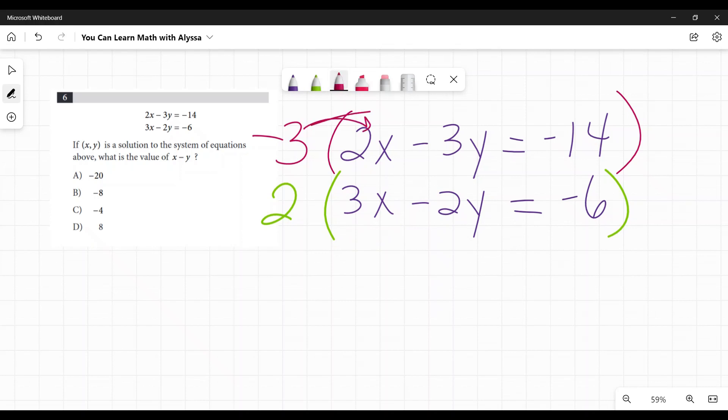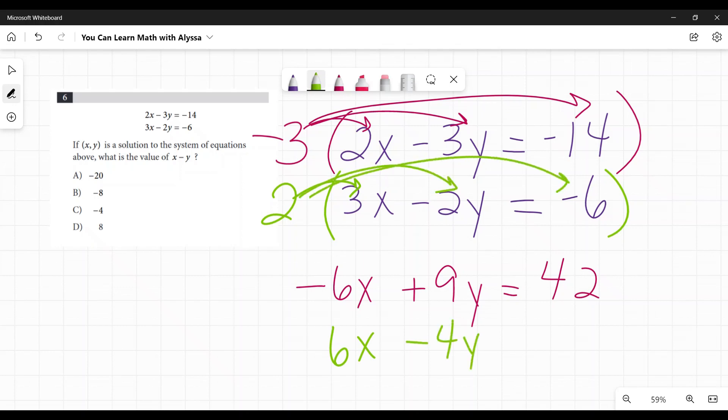So first, I'm going to go through and multiply this by everything. I'm going to write it down here. Negative 3 times 2x is negative 6x. Negative 3 times negative 3y is a positive 9y. And negative 3 times negative 14 is a positive 42. On the bottom, I have 2 times 3x, that's a positive 6x. 2 times negative 2y, that's a negative 4y. And 2 times negative 6 is a negative 12.